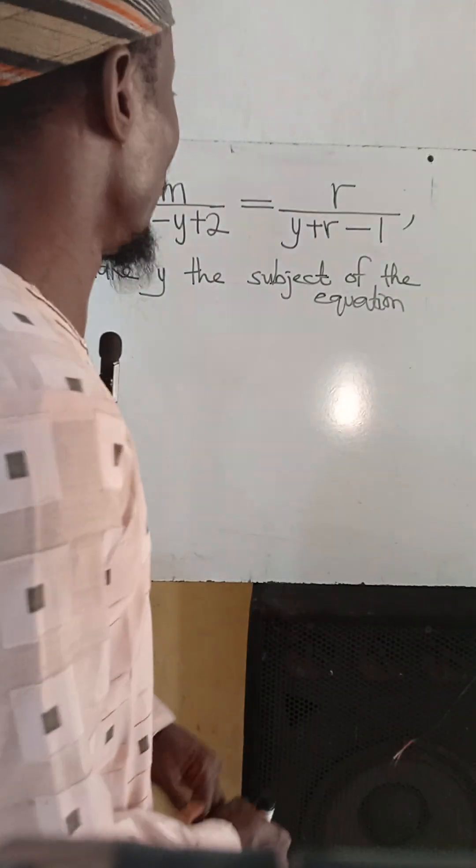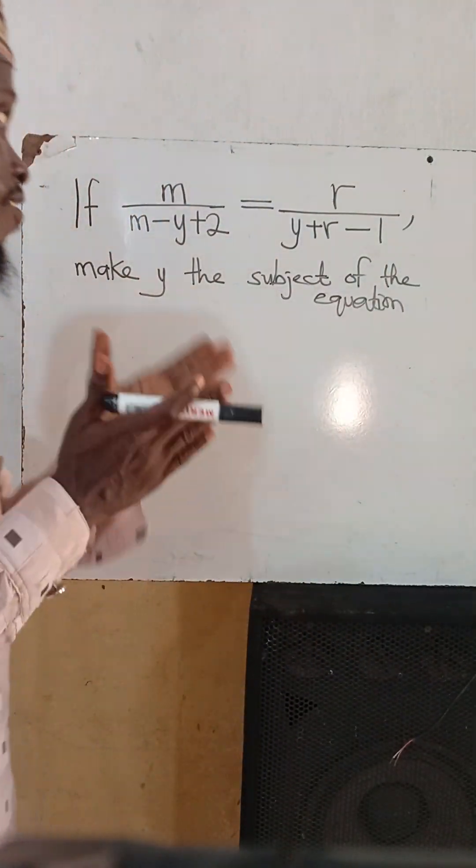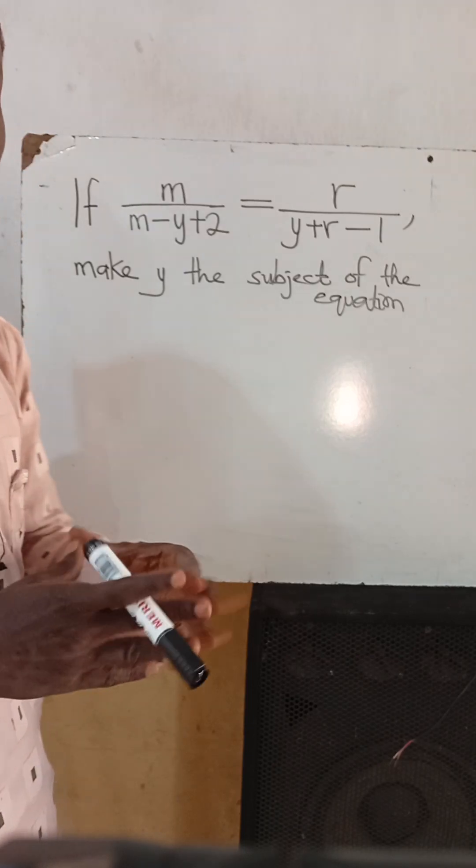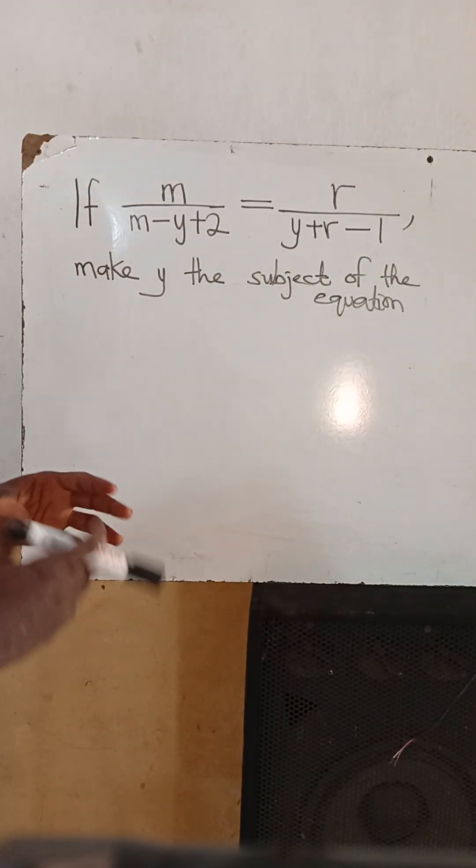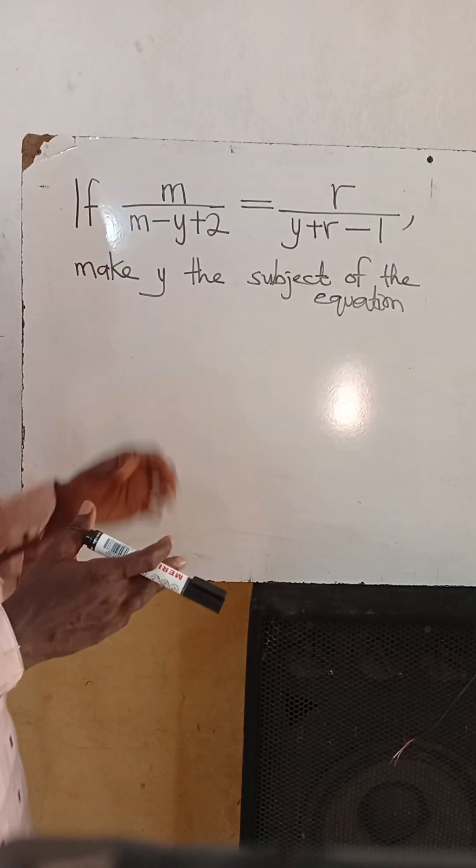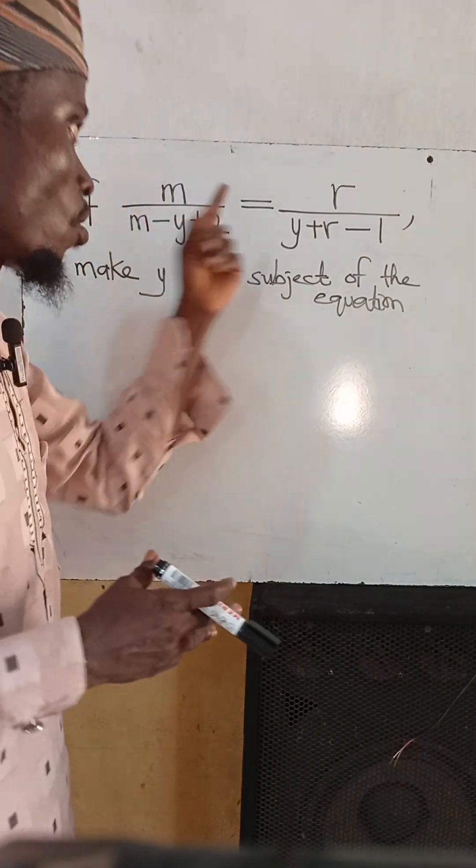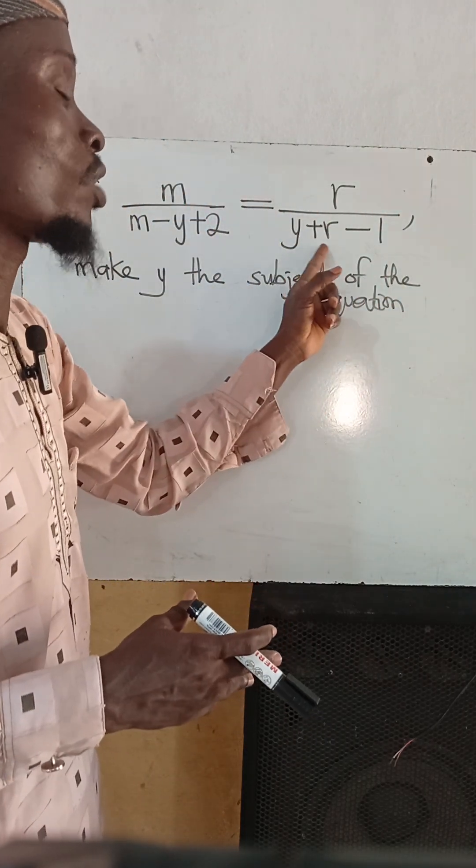Welcome to my channel. Today we are solving this question on the subject of formula and relations. If m divided by m minus y plus 2 is equal to r divided by y plus r minus 1, make y the subject of the equation.